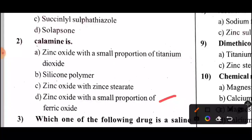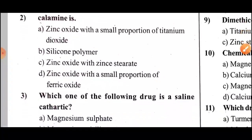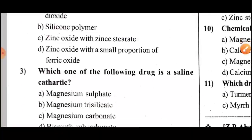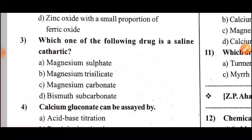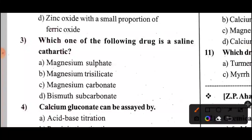Calamine is Zinc Oxide with a small preparation of Ferric Oxide. Question 3: Which one of the following drugs is a saline cathartic? This is the second topic.